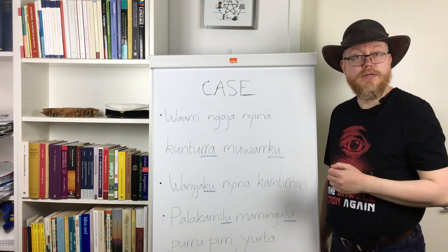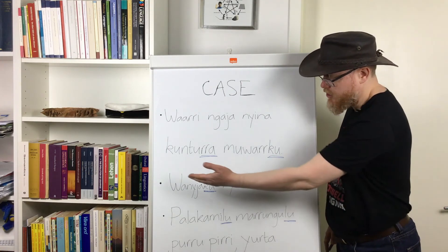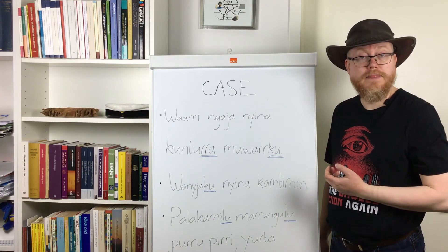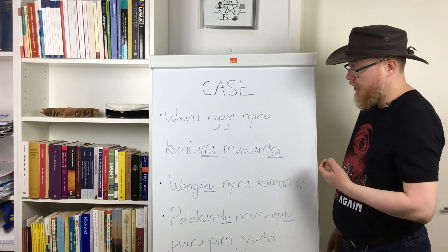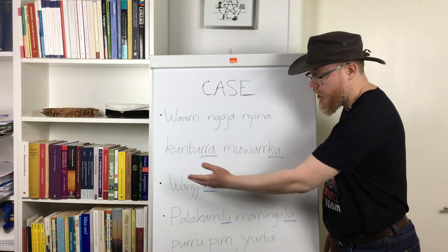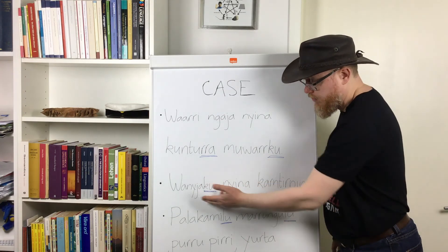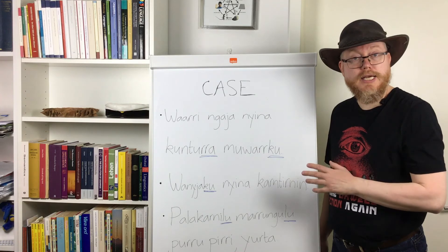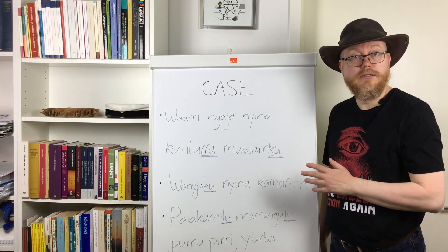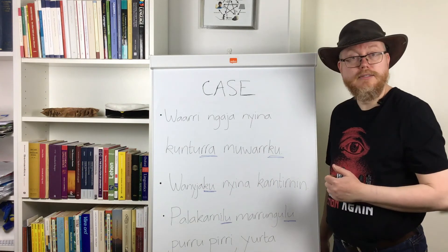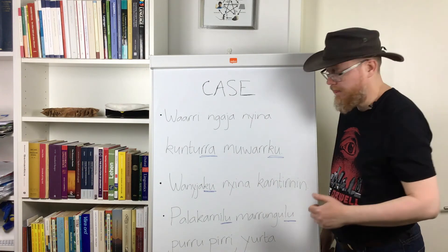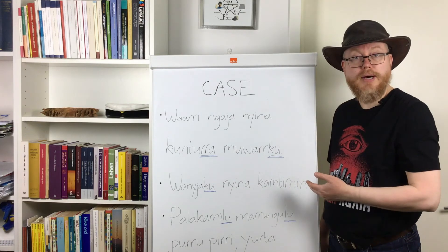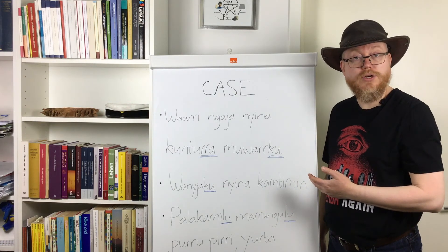Here we have an example of the ergative allomorph 'gu': 'wandagu jina kandinin'. 'Wanda' is a word for dog — 'juguru' is another one. As it happens, 'wanda' is disyllabic and has a homorganic nasal stop cluster in the second syllable — 'nd' — and so the 'gu' ergative allomorph is used. The sentence means 'the dog will bite you' in the future tense.